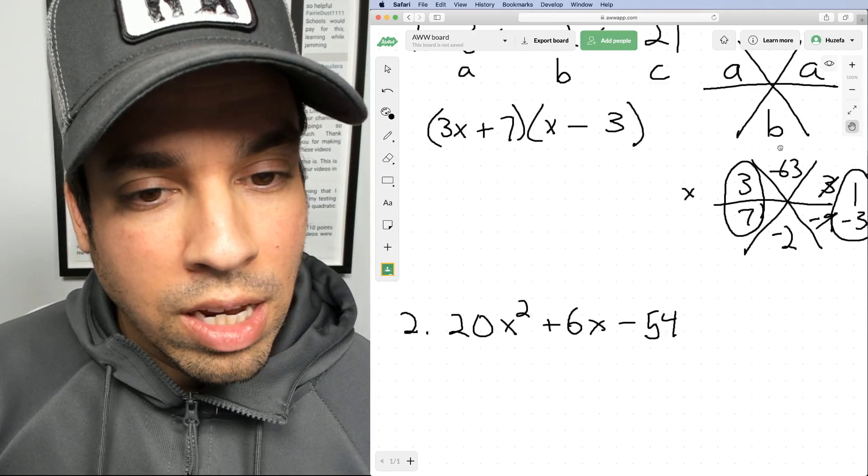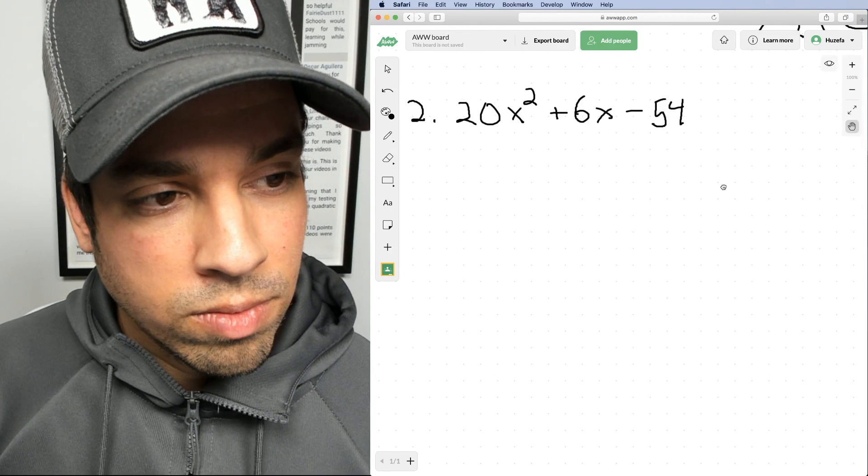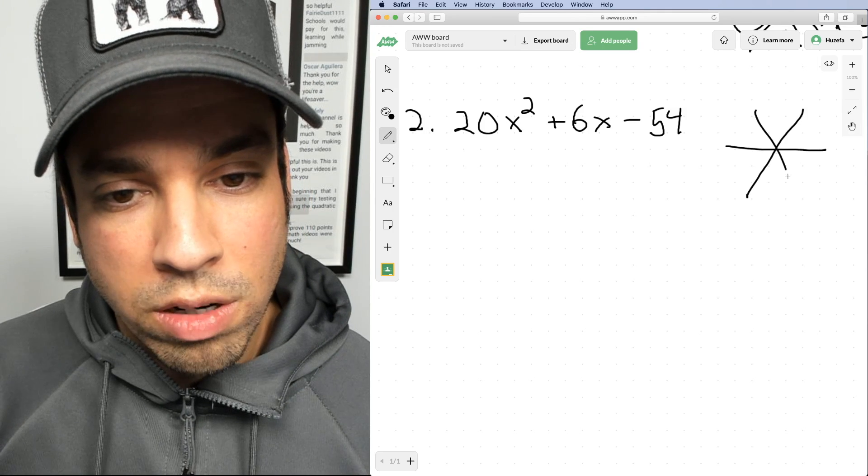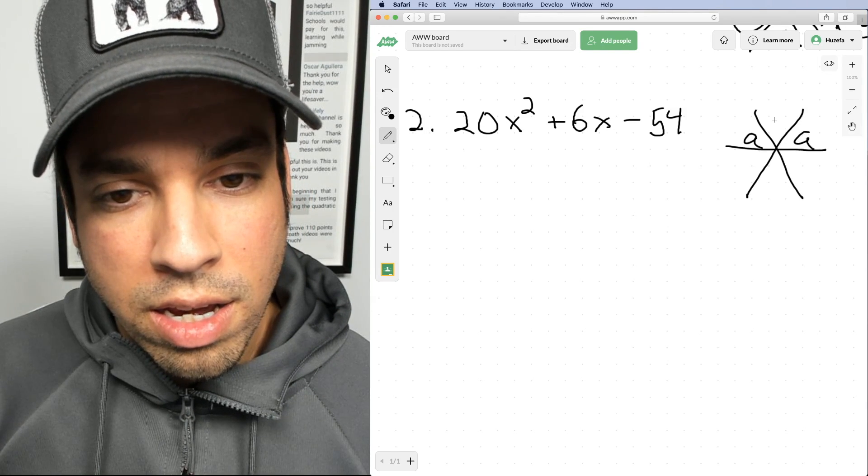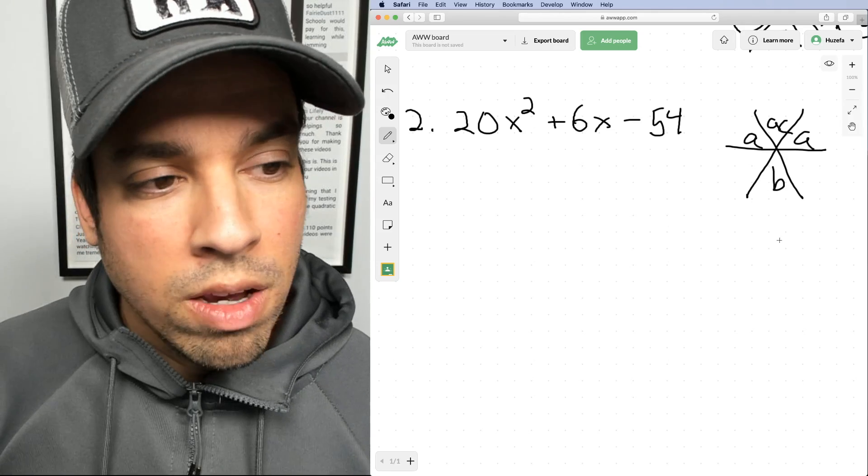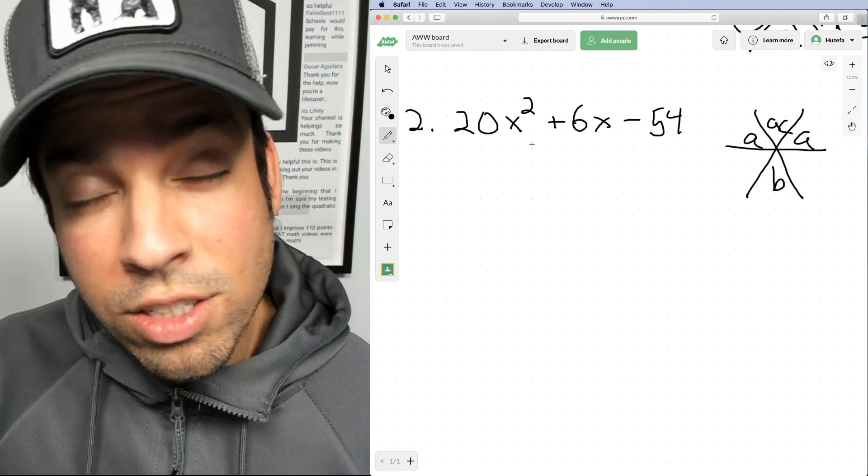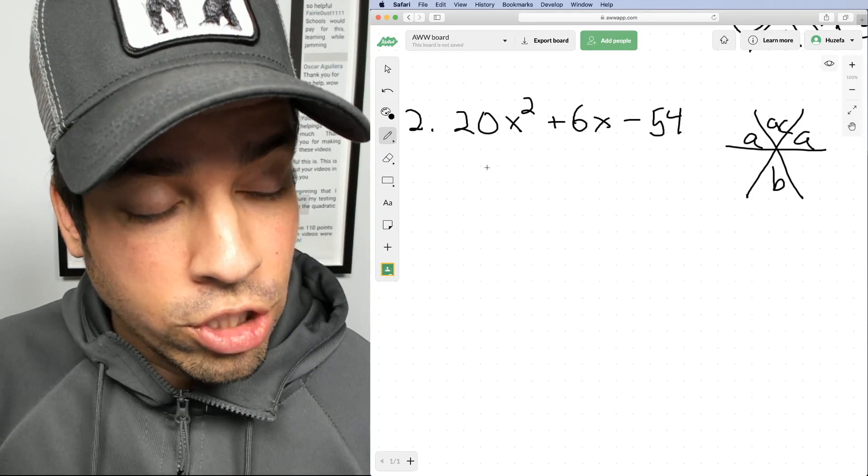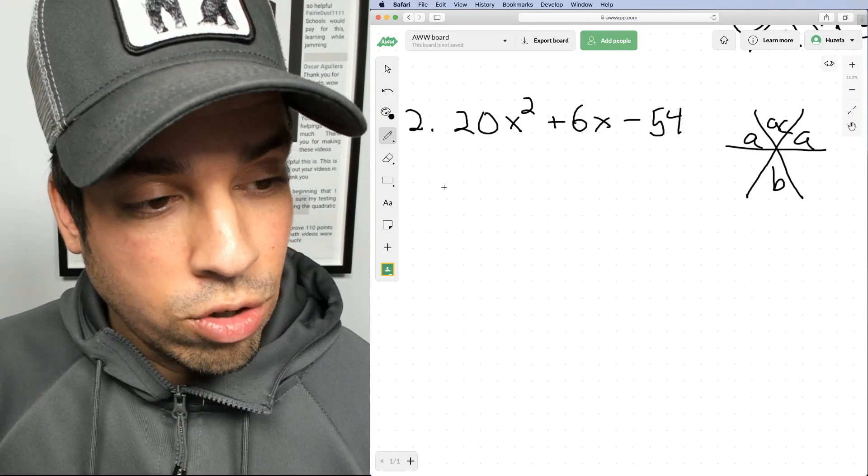Now let's come to the second example. Again, I'm going to put up our prototype for the star method where we say it's A, A, A times C and B. So how do we do this one? Well, first again, let's check to see if there's a GCF. There is a GCF and you have to check if there's a GCF, otherwise this won't work. And that's two.